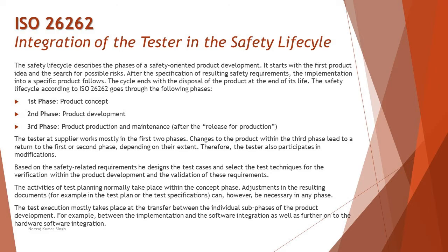The safety life cycle generally describes the phases of a safety-oriented product development. It starts with the first product idea and the search for possible risks. After the specification of the resulting safety requirements, the implementation into a specific product follows. The cycle ends with the dispersal of the product at the end of its life.